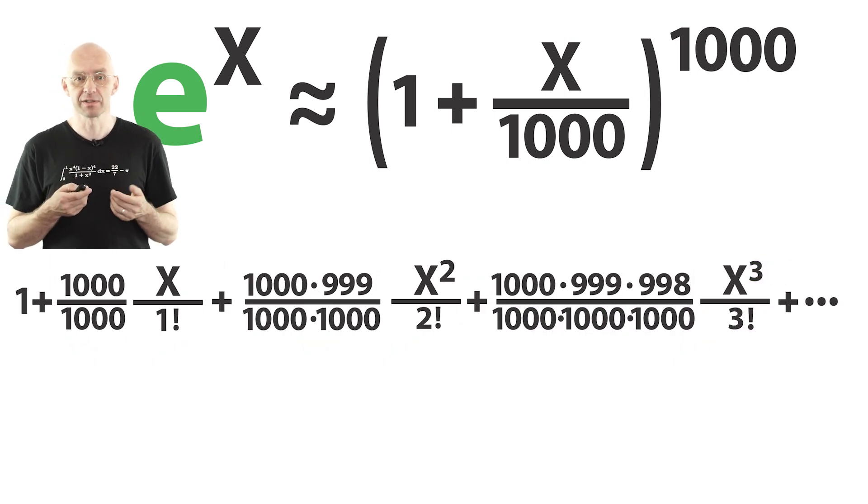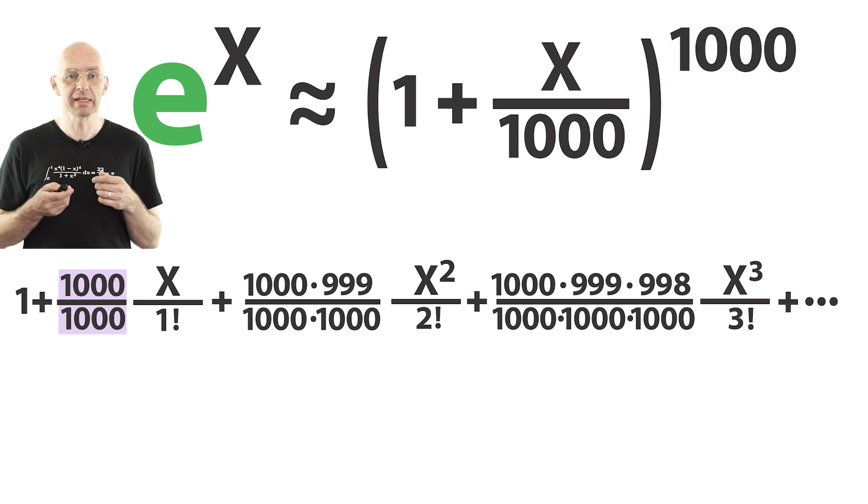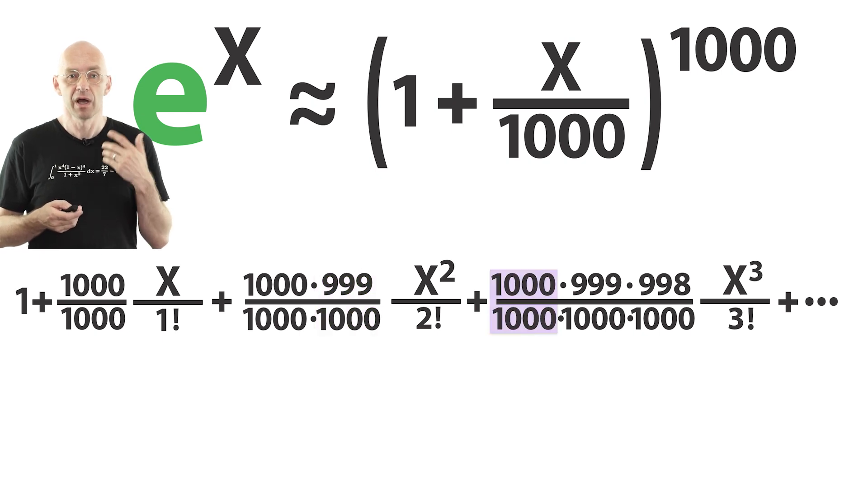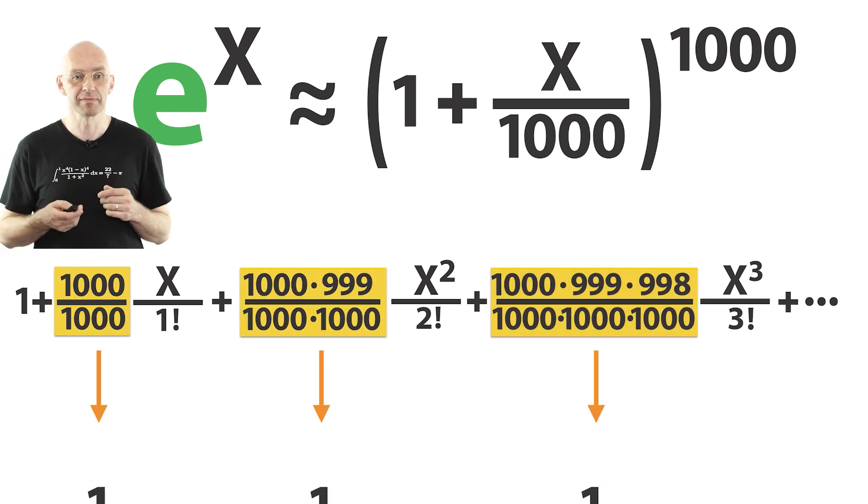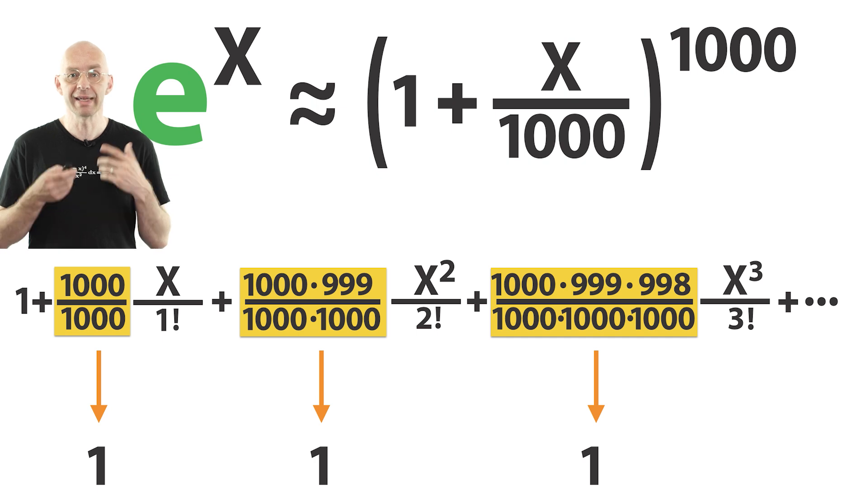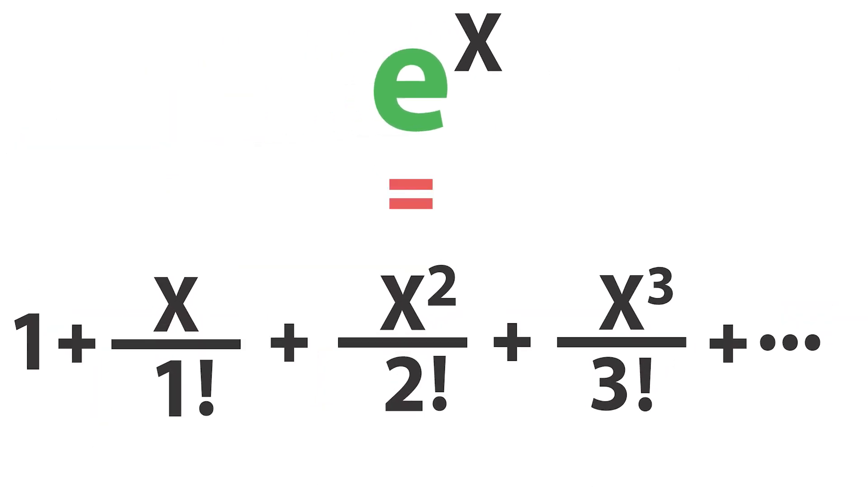Now let's have a look at the fractions. This guy here is equal to 1, that one here is equal to 1/2. What about that one here? Well it's close to 1 and as we replace 1000 by larger and larger values, this fraction will tend to 1. All the other fractions that you see here also go to 1. So all the numbers here will go to 1. And so in the limit we get this identity here.